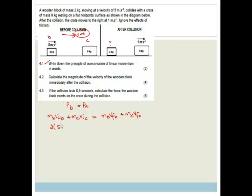So the mass of the block is 2. The initial velocity of the block is 5. Plus, now you can write 0 because it is stationary. Is equal to the mass of the block, which is 2. The final velocity of the block is what we're trying to find out. Plus, the mass of the crate is, what is that, 8? Oh, it's 9. 9 times by the velocity of 1. And now we just solve for this VFB. So that there is 10 is equal to 2 VFB plus 9. So we take it across. It becomes 1 is equal to 2 VFB.